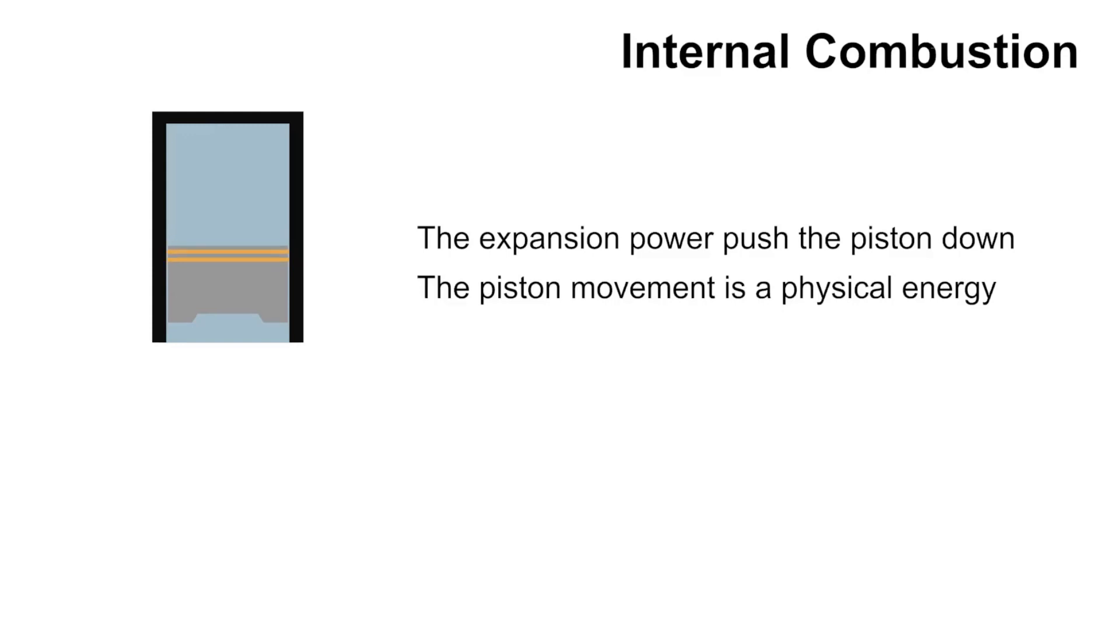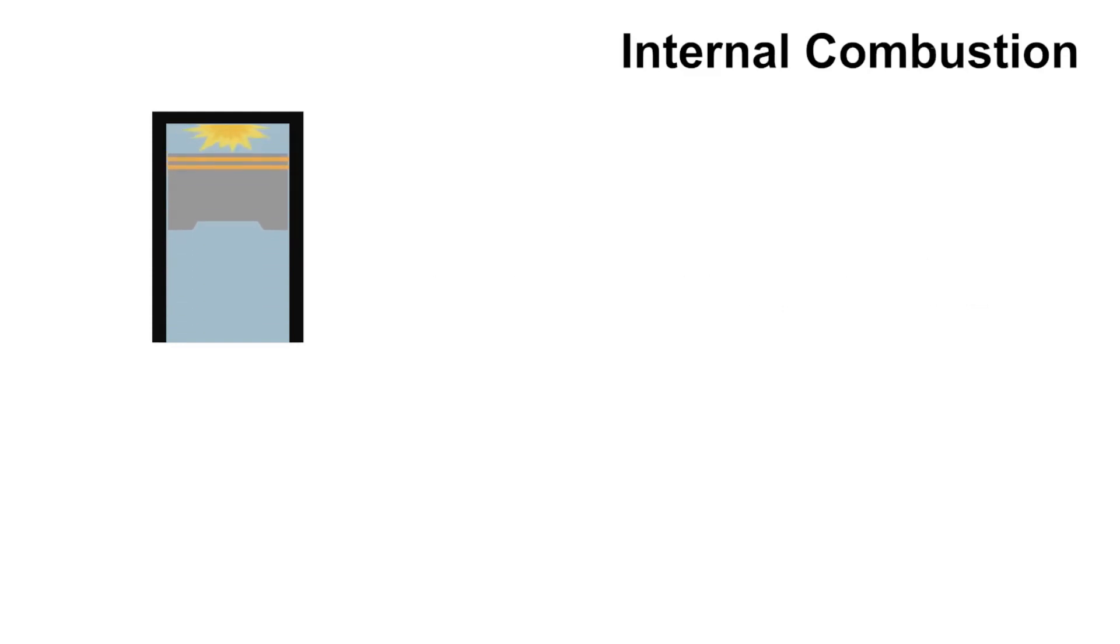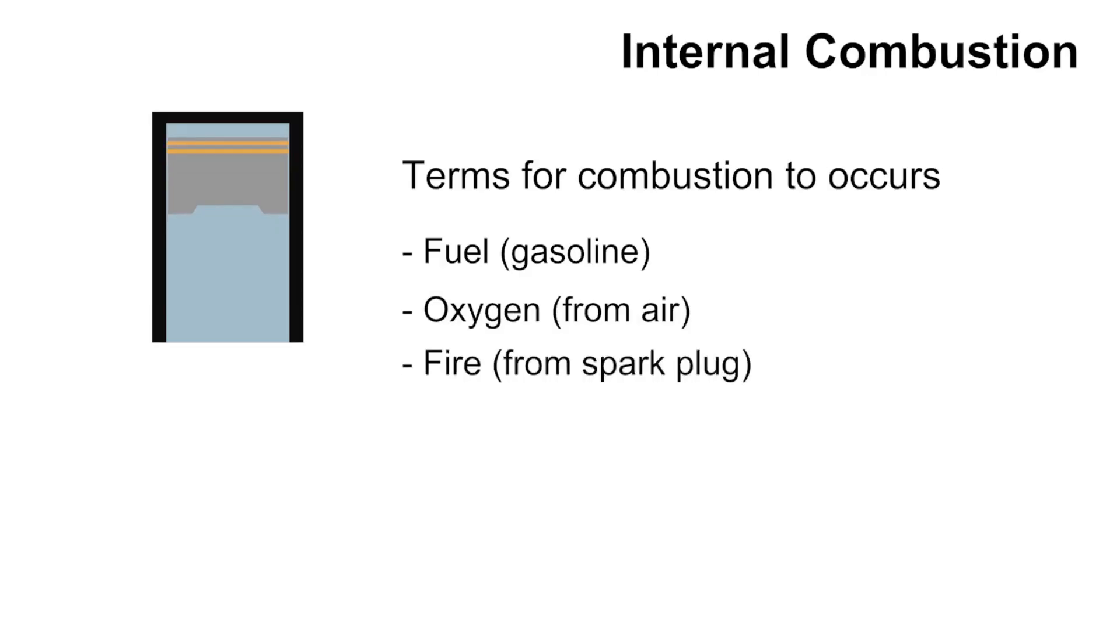But how to get combustion inside the engine? The combustion occurs when the fuel burns. But we cannot forget that fire needs oxygen. So to get combustion, we need air, fuel, and fire. Air and fuel are mixed in the carburetor with ideal scale, while the fire is produced by the spark plug through the ignition system. If the three materials meet together, the combustion occurs.